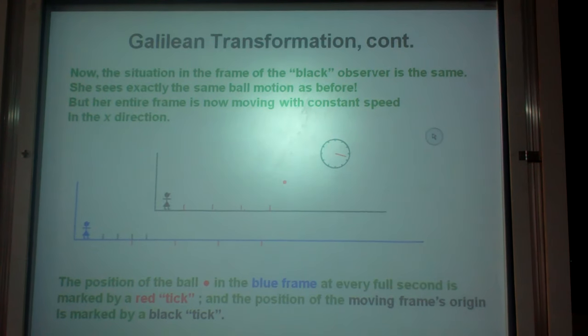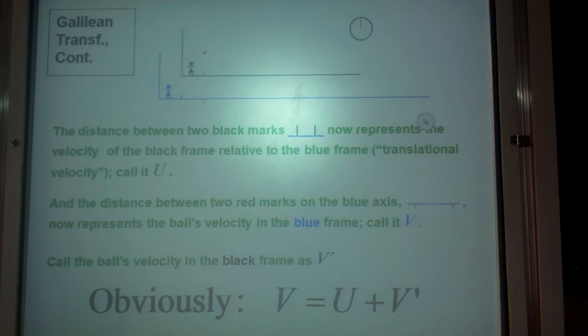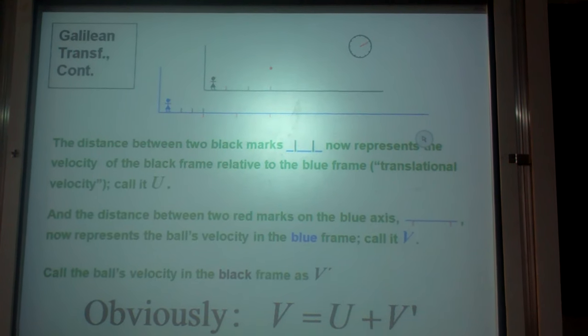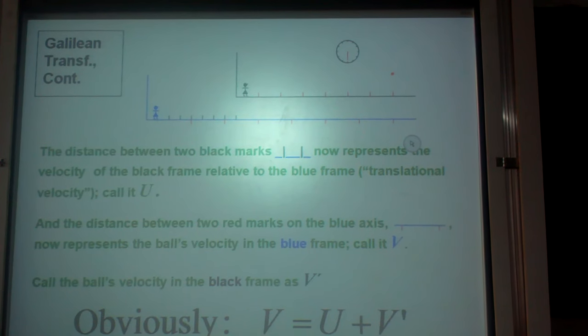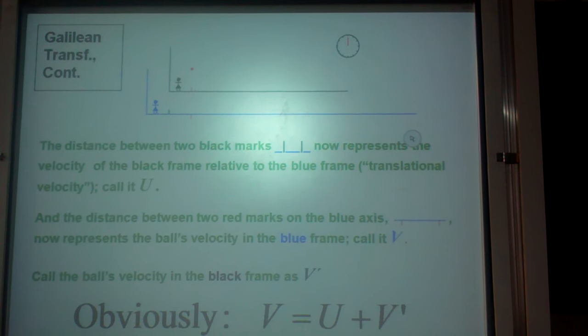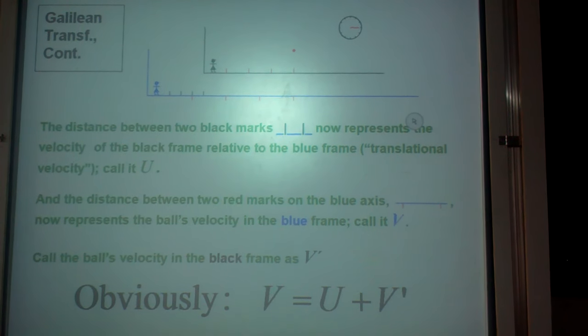So what is it? The distance between the two black marks represents the velocity of the black frame relative to the blue frame. This is known as translational velocity. We call it as U.